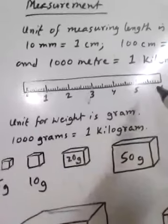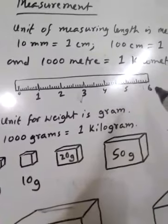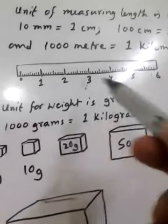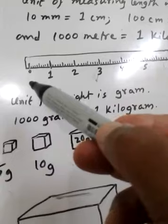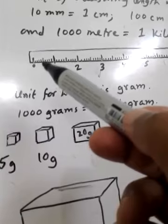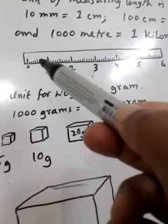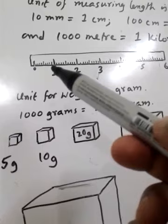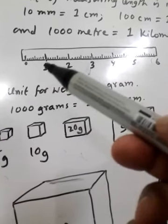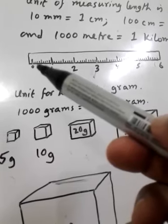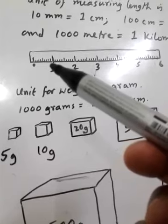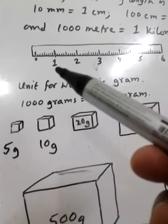This is the scale. You have a scale in your geometry box. This is 0 and this is 1. The space from 0 to 1 is divided into 10 parts. This is 5 millimeters. 1 millimeter, 2, 3, 4, 5, 6, 7, 8, 9, 10 millimeters. So 10 millimeters equals 1 centimeter.